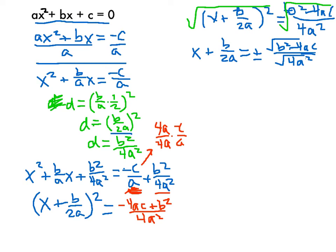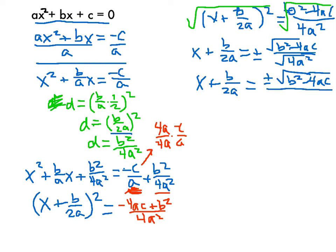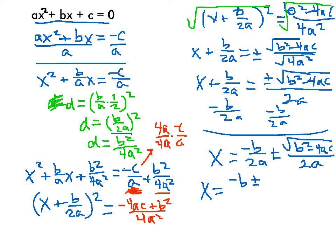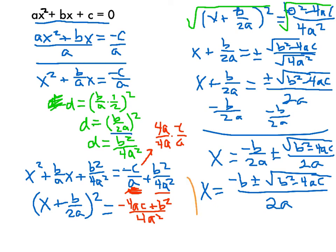The numerator will stay the same, so we keep plus or minus √(b² − 4ac). Down below, the square root of 4a² is 2a. Now if I subtract b/2a from both sides to get x by itself, I'll have x equal to −b/2a plus or minus √(b² − 4ac) all over 2a. Since those have the same denominator, I can combine them: x = [−b ± √(b² − 4ac)] / 2a. This is the quadratic formula.